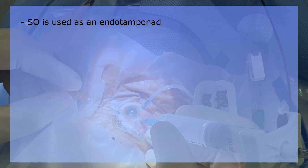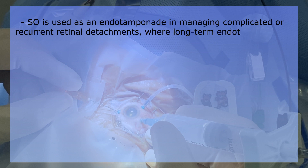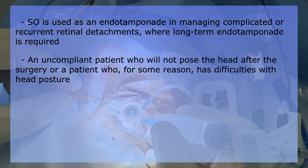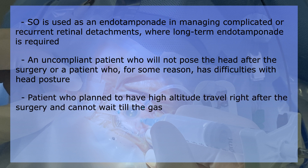Silicon oil is used as an endotamponade in managing complicated or recurrent retinal detachments where long-term endotamponade is required. Other cases where silicon oil can be preferred over gas are a non-compliant patient who will not maintain head posture after surgery, a patient who plans high altitude travel right after surgery and cannot wait for gas absorption, and also a patient with only one eye.